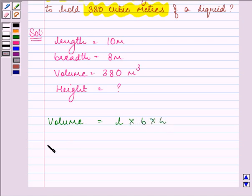Let us substitute the values. That implies volume is given to us as 380. Length is 10, breadth is 8. We need to find out height. So 380 divided by 10 into 8 will be equal to the height.